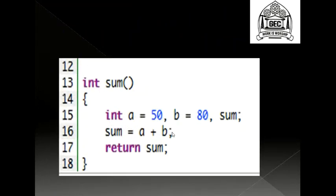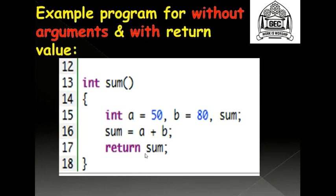Next we have a code with no arguments but with a return value at line number 13. Because it has a return type at line 13, I will have to return something of data type int. At line 15 are local variable declarations, line 16 is the code the function performs, and line 17 is the return statement. Now let's see how this functions.